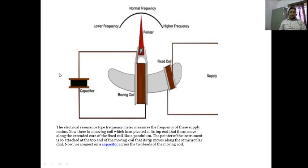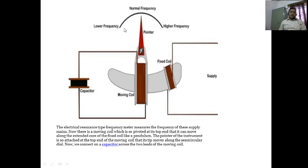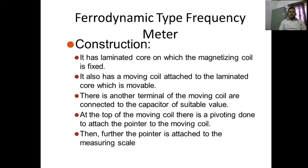With this construction and working, the electrical resonance type frequency meter measures the frequency of the supply mains. The moving coil is pivoted at its top end and can move along the extended core of the fixed coil like a pendulum. The pointer of the instrument is at the top end of the moving coil and its tip moves along a semi-circular dial. We connect a capacitor across the two leads of the moving coil.